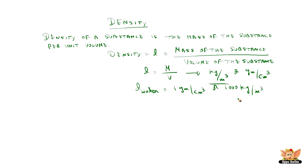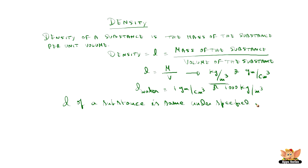Density is a characteristic property of a substance. The density of a substance is the same under specified conditions — it does not change. Hence it is a characteristic property of the material, because the mass and volume are the same under specified conditions, and therefore density is also the same.